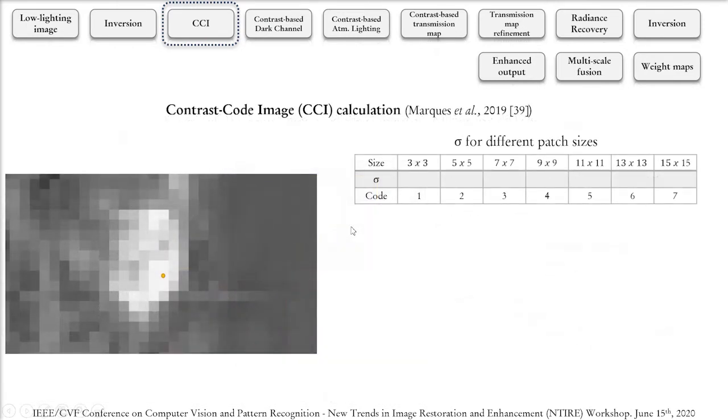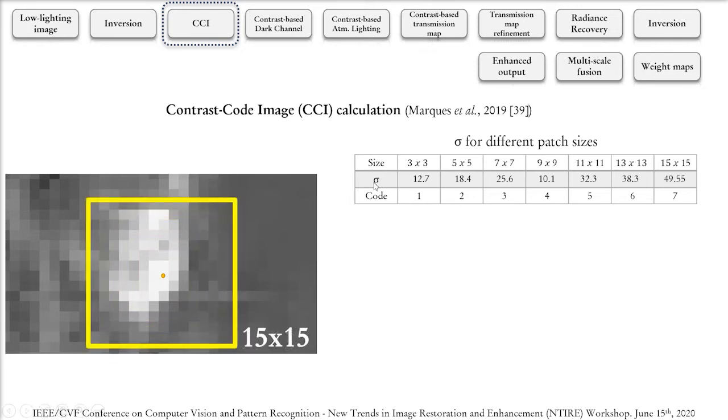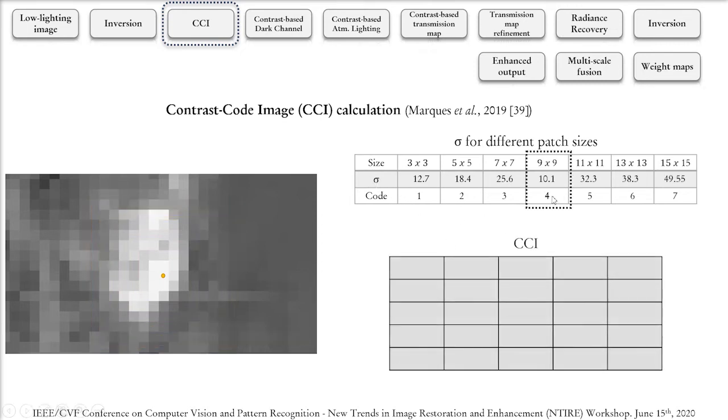We offered the contrast code image in a publication in 2019. The contrast code image is calculated by centering patches of seven different sizes ranging from 3x3 to 15x15 and calculating the standard deviation of their content. Then we pick the one that generated the smaller standard deviation and put its equivalent code in this same position on the CCI and on the original image. CCI and the original image have the same size.